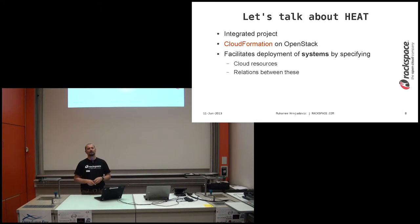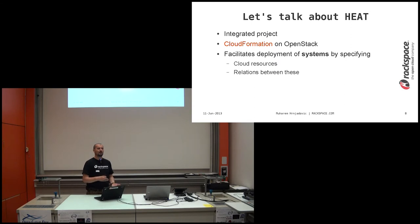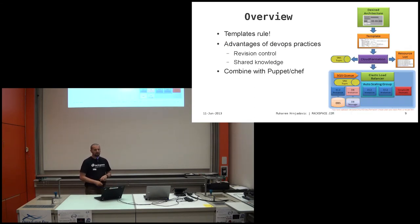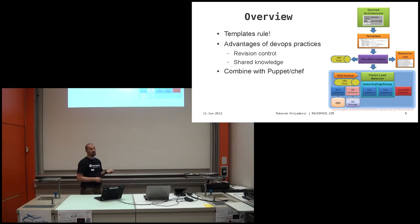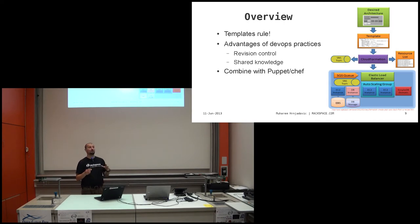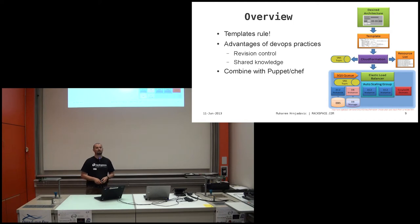With CloudFormation or Heat, you write a template file that specifies what your entire system looks like — it enumerates all the cloud resources you need and how they relate to each other. You first figure out your architecture, write the template, and pass it to a service. In Amazon it's CloudFormation, in OpenStack it's Heat. It looks at the template and says: he wants this resource, an auto scaling group, a load balancer, this many instances — and then that service will materialize the entire setup, bring up all the resources, associate them as needed, and bring the system to stand up.